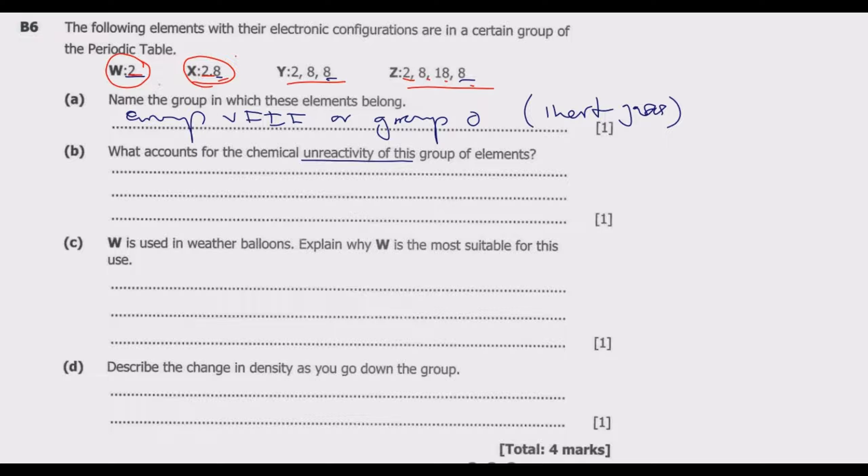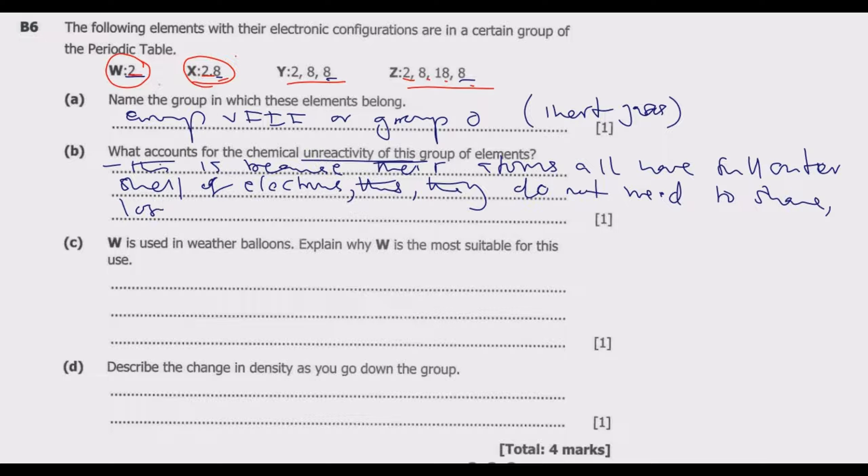They are unreactive because their atoms have a full outer shell of electrons, so they do not need to share, lose, or gain electrons to achieve a full outer shell of electrons. This is the reason.